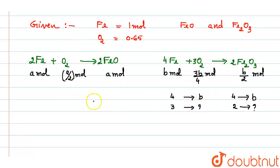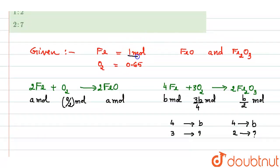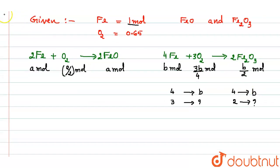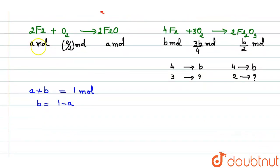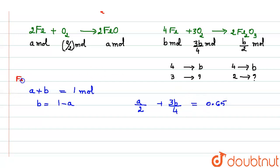Total Fe taken is 1 mole, distributed in both compounds, so a + b = 1, meaning b = 1 − a. Now for the oxygen used in both equations: a/2 + 3b/4 = 0.65. This equation is with regard to the oxygen used.